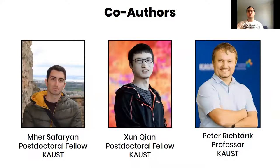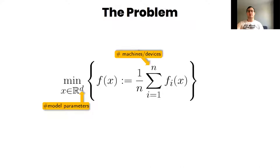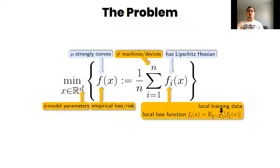We can see the finite-sum minimization problem. Here d is the number of model parameters, n is the number of machines, the function that we want to minimize is μ-strongly convex, and each local loss function has Lipschitz Hessian.